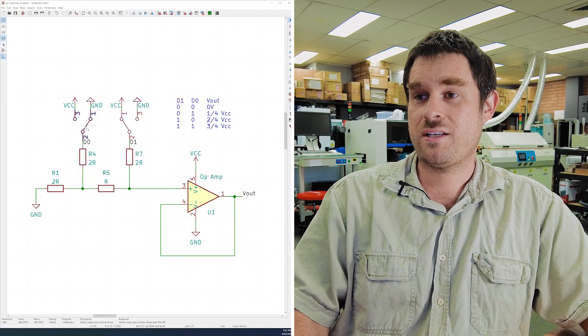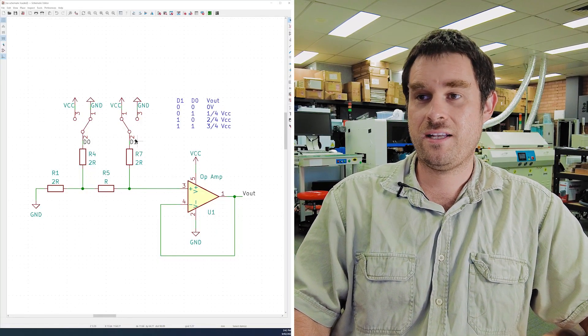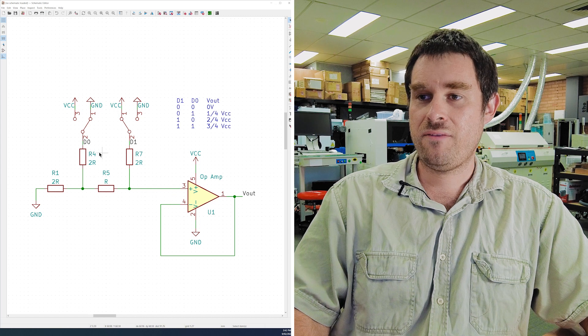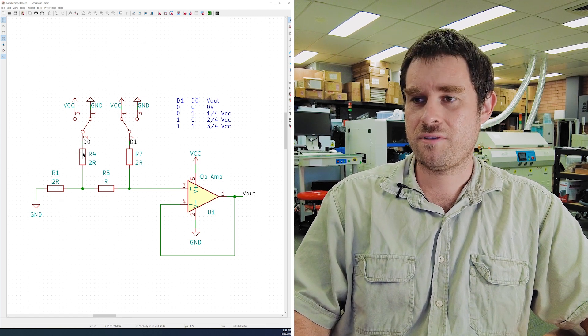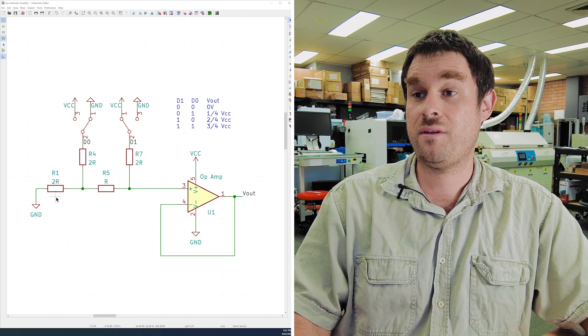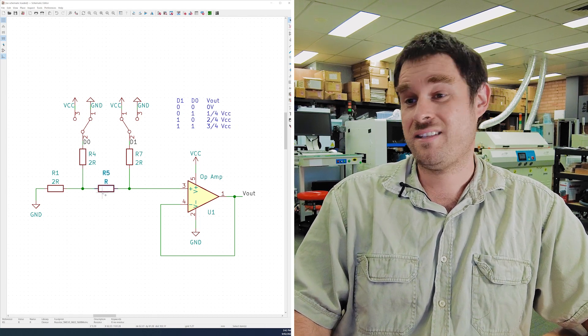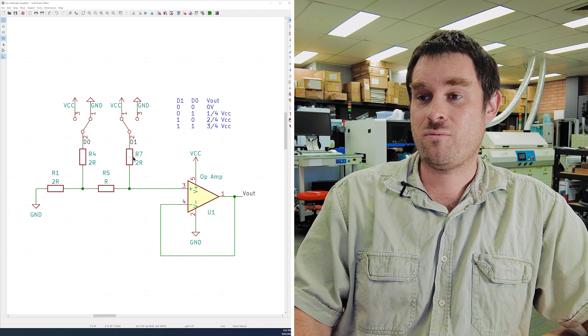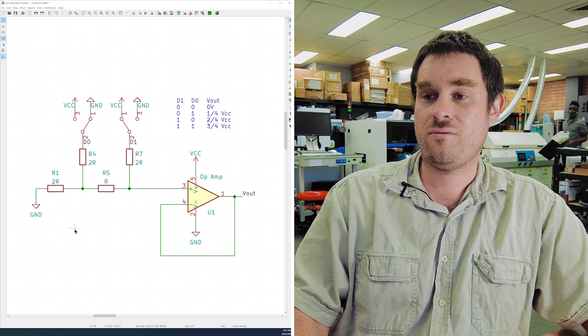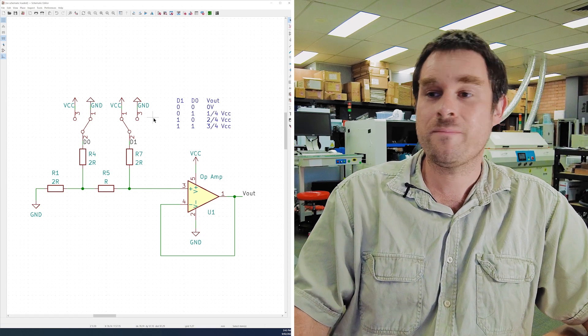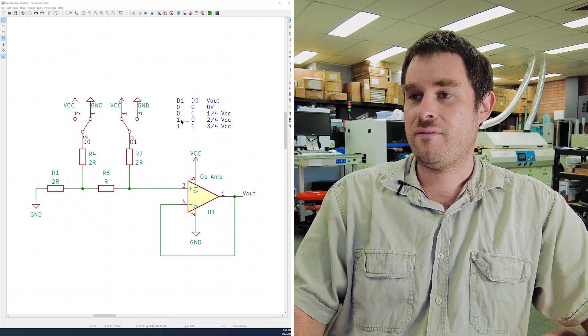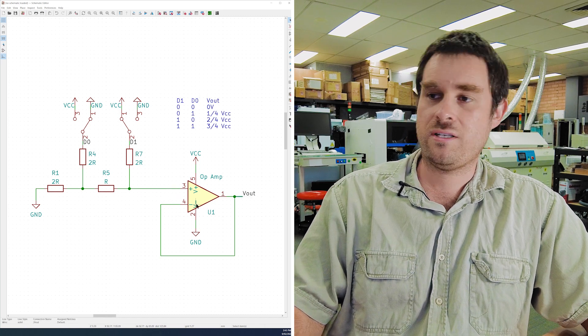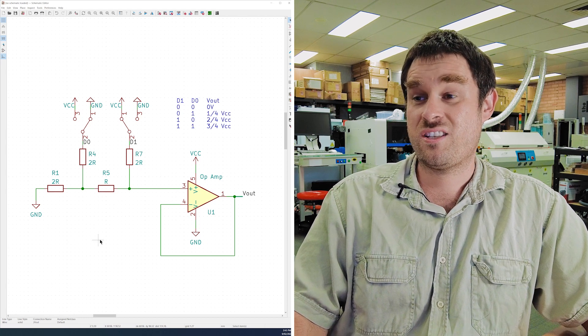So if you imagine this switch is currently connected to VCC and this switch is currently connected to ground, what we have here is a 2R resistance going to VCC. And if you go and do the very simple maths on this resistor network on the left here, we've got two 2Rs in parallel that both go to ground. So that's a resistance of R that's in series with another resistance of R. So this whole thing is two times R. That basically means that we have a VCC, then a 2R, then a 2R going to ground, which is just a 50% voltage divider.